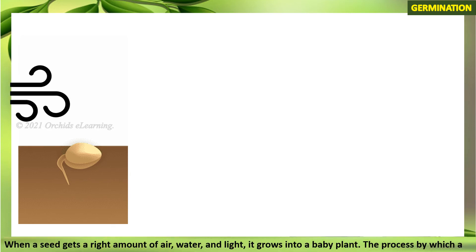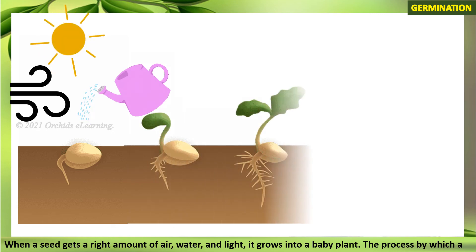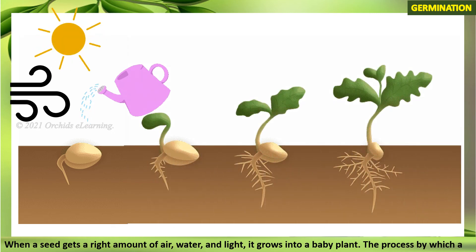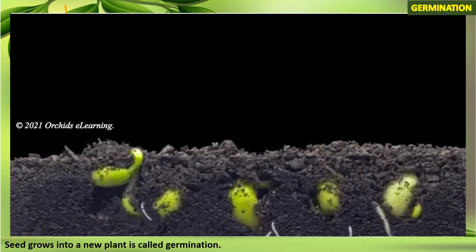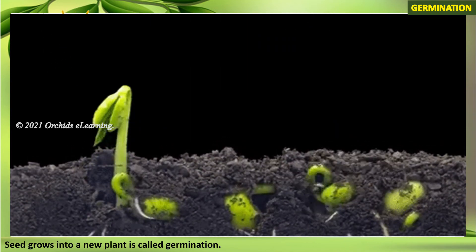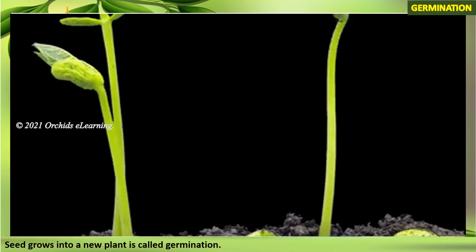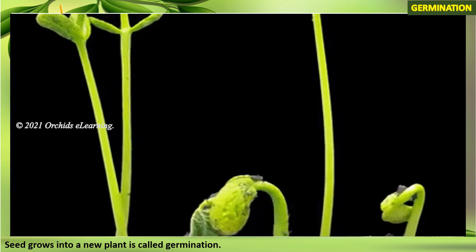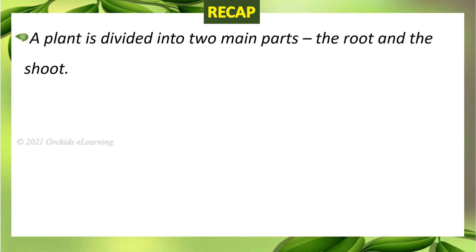Spices such as mustard and cumin add flavor to our food. Germination: when a seed gets the right amount of air, water, and light, it grows into a baby plant. The process by which a seed grows into a new plant is called germination.